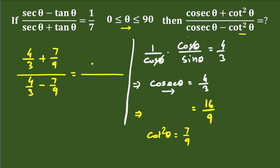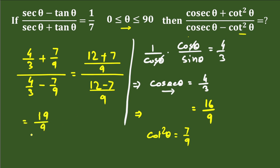Taking LCM as 9: the numerator becomes 12 plus 7 equals 19, over 9. The denominator becomes 12 minus 7 equals 5, over 9. Dividing these, the 9s cancel, giving us 19 divided by 5. So the final answer to this problem is 19 divided by 5. Please leave a comment and do not forget to subscribe to the channel.